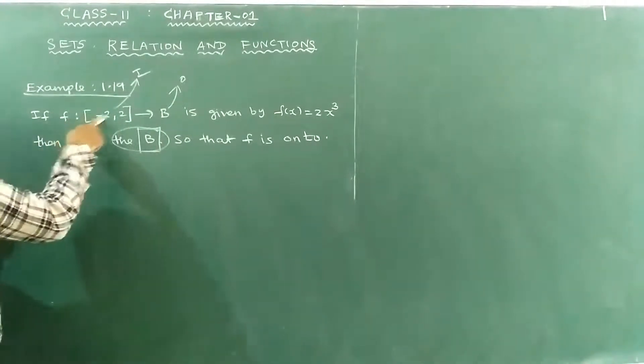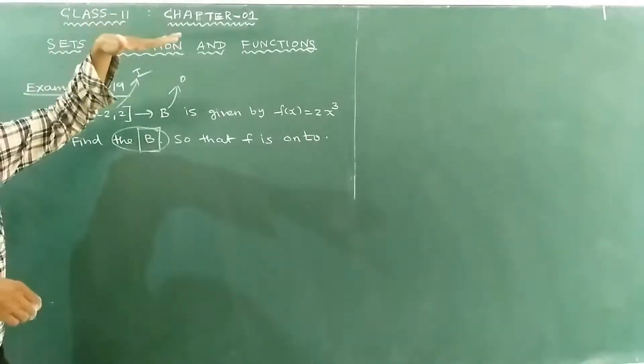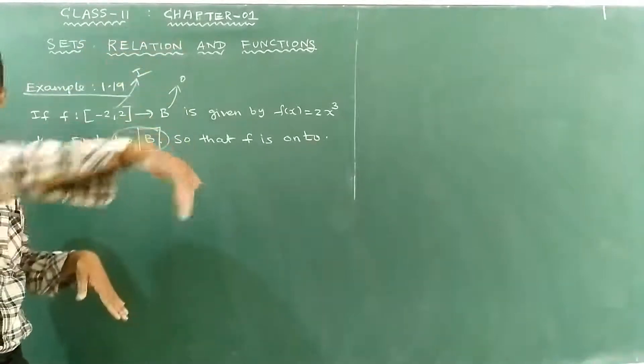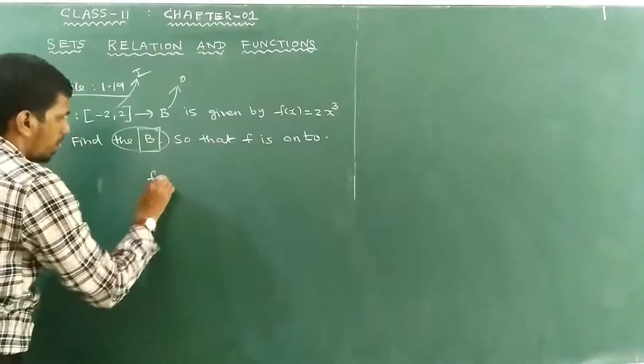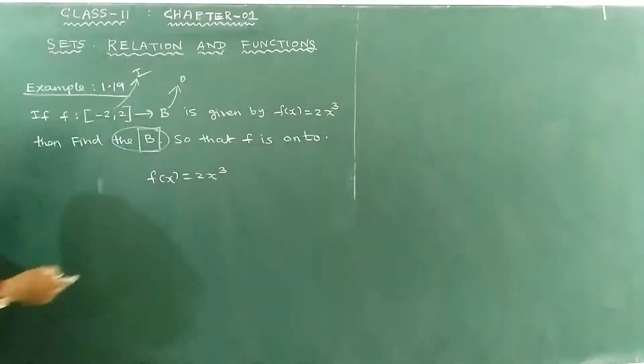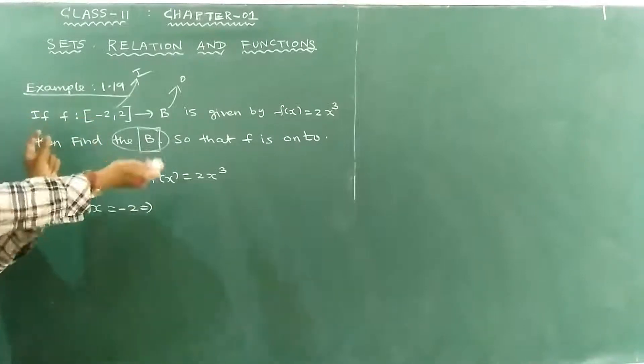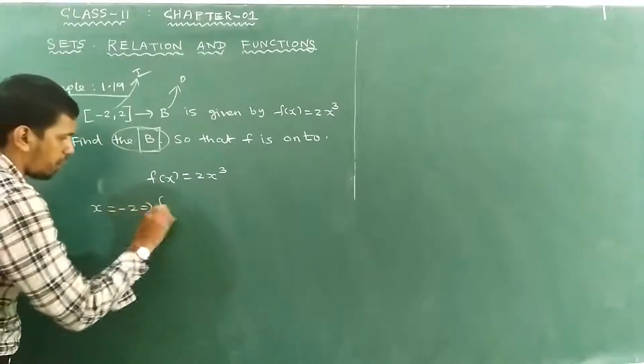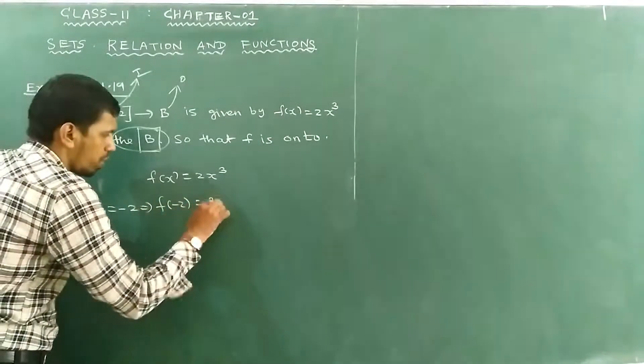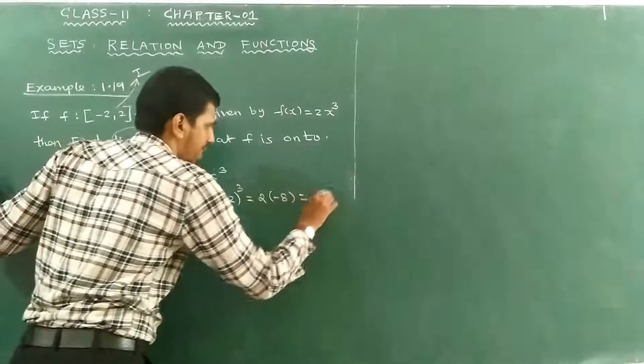If x is equal to minus 2 and plus 2, then input - these are equal to maximum value. If the maximum value is zero, then input x. When talking about minimum, x is minus 2, so f(-2) equals (-2)³ which is -8.